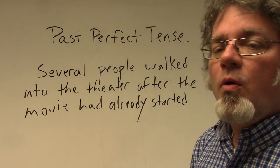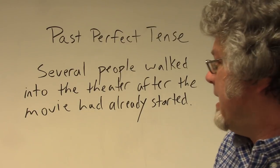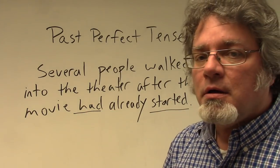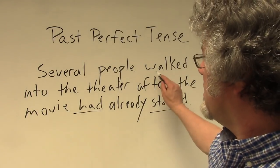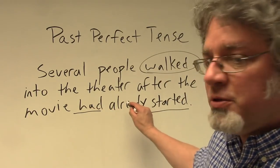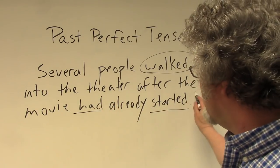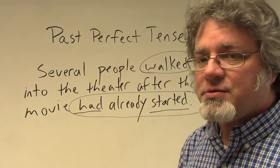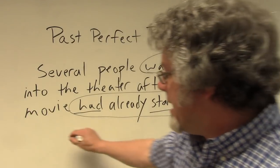Several people walked into the theater after the movie had already started. There are two past actions: here and here - has started. We put the word 'already' between this helping verb and the main verb, and the past perfect tense indicates what happened first in the past.